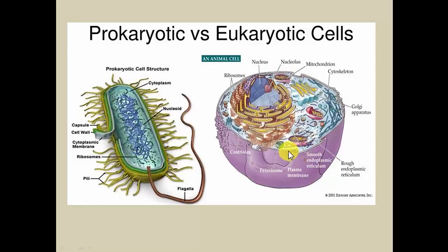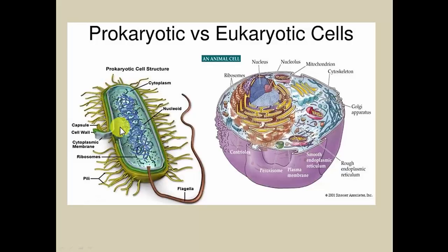With prokaryotes, they kind of have a loose skin and some fluid, and the DNA is floating around in there — that's basically it. A prokaryote exists of just those basic things: a membrane, some fluid, and DNA. With a eukaryote, we have the membrane, the fluid, and then what we call organelles.